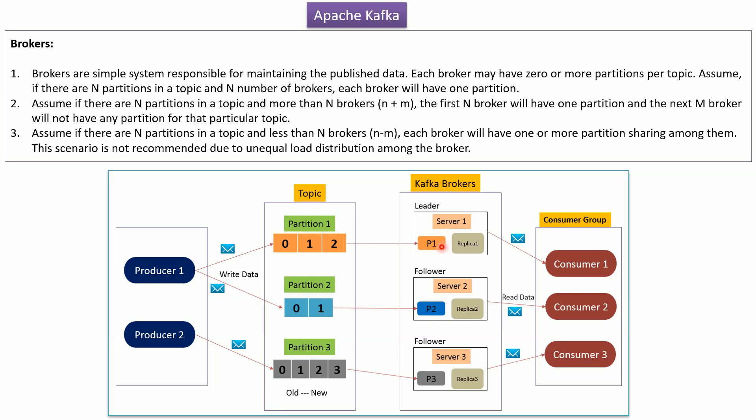If there are 3 partitions in a topic and only 2 brokers, the first broker will have 2 partitions and the second broker will have 1 partition. This scenario is not recommended due to unequal load distribution among the brokers.